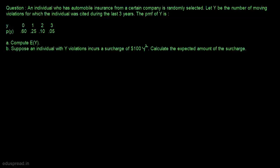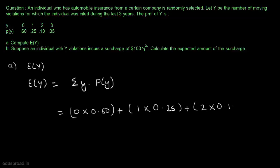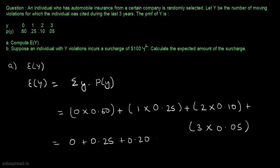The expected value of Y is equal to the summation of y multiplied by P(y). So this is equal to 0×0.60 + 1×0.25 + 2×0.10 + 3×0.05, which equals 0 + 0.25 + 0.20 + 0.15, and this is equal to 0.60. So the expected value of Y is 0.60.